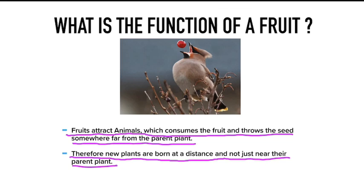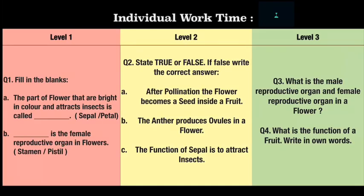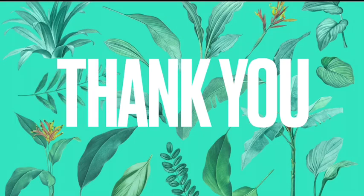With this, we are closing the chapter. Here is your individual work time. The first task is fill in the blanks. The second is true and false — if false, write the correct answer. The third is to write in your own words: what are the male and female reproductive organs in a flower, and what is the function of a fruit? You have now completed Chapter 2 of Science. Thank you.